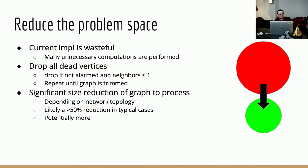Using that dead vertex concept, we can filter the graph recursively before processing it, which can result in a significantly smaller effective graph. Depending on how dense the graph is and the overall topology, it's reasonable to think the majority of nodes could be dropped. Dropping nodes should have a linear impact on memory footprint and processing time, so if we can shrink the graph by 50%, we should be able to correlate twice as fast and use half the memory.